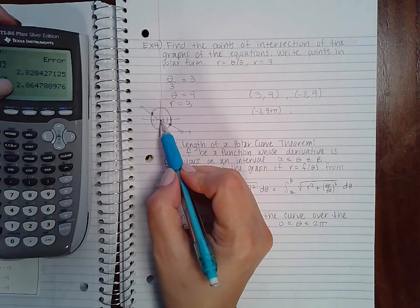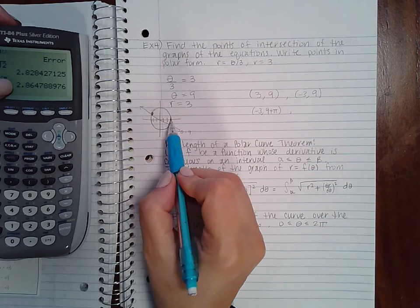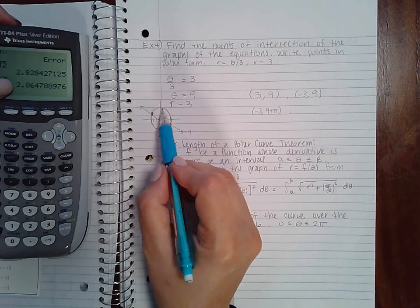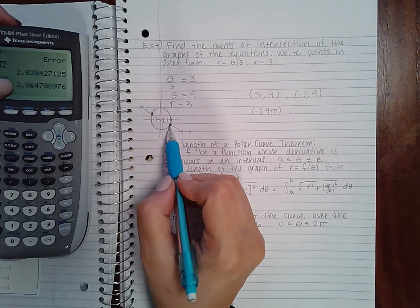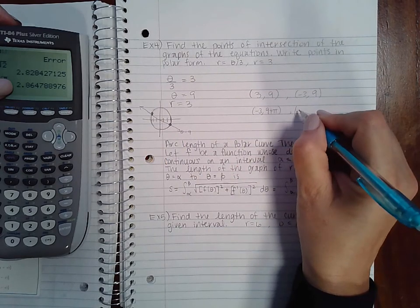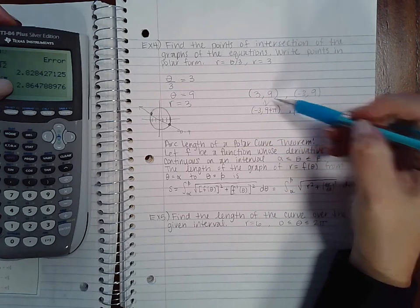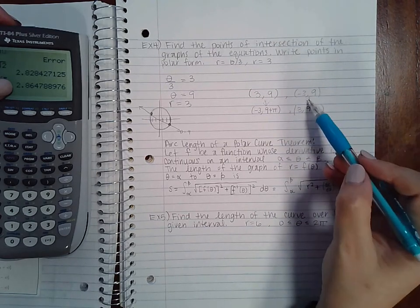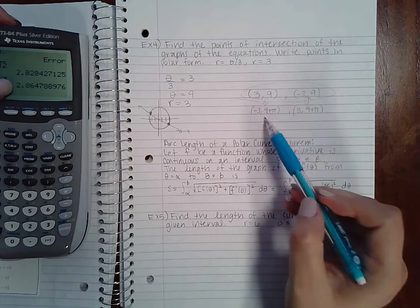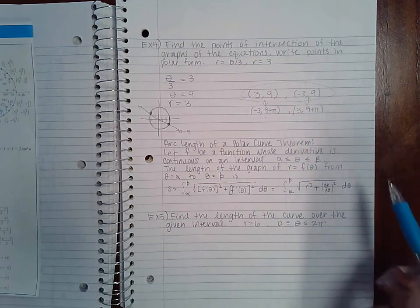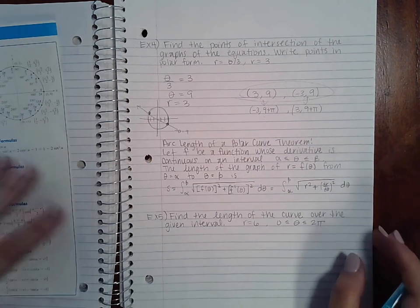Or you could have gone positive and then gone pi around and then a nine. So remember, these are the same point and these are the same point. Typically they want these guys, but just so that you knew that there was another equivalent form, I went ahead and wrote those in there.